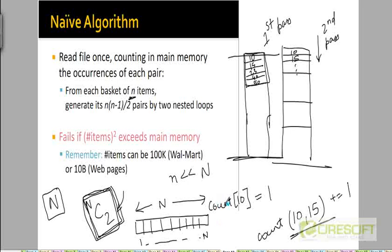But when we are in the second pass, the size of our array now has to be capital N choose 2, because we are generating all possible pairs of items and we are keeping track of counts for all the pairs. And there are N choose 2 such pairs.